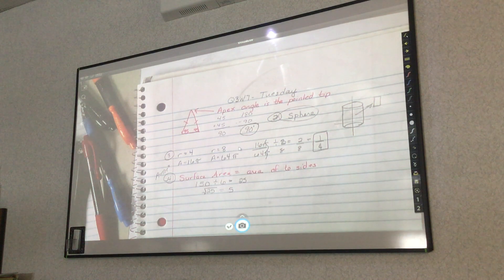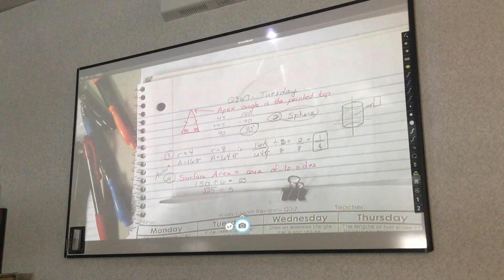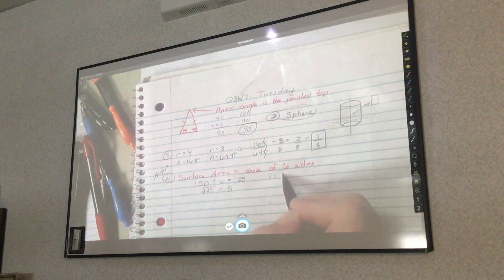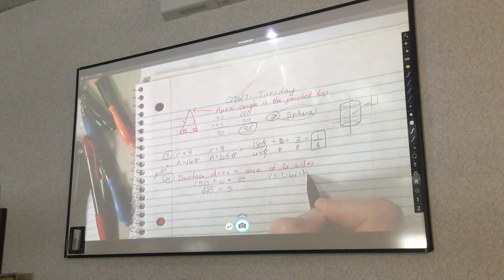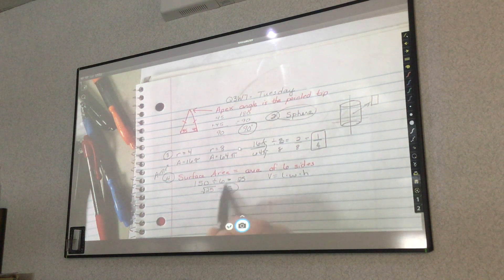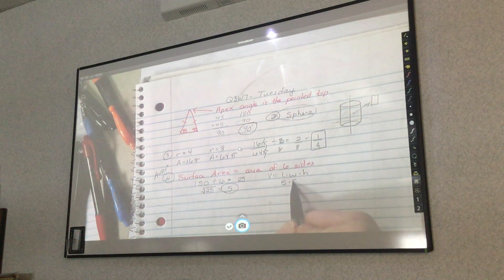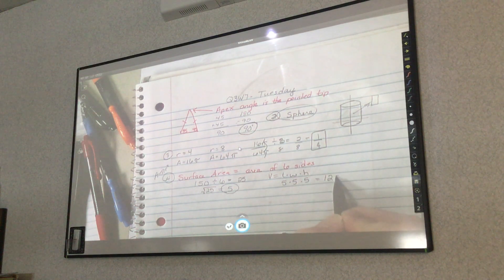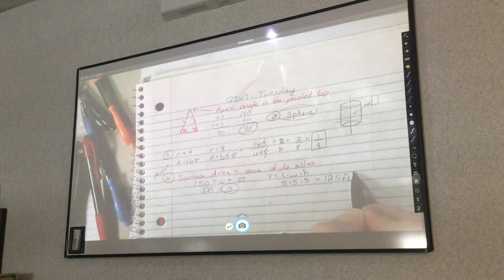And then now, I need to find the volume. So volume equals length times width times height. So we said each side is just 5, so it would be 5 times 5 times 5, which equals 125 feet cubed.